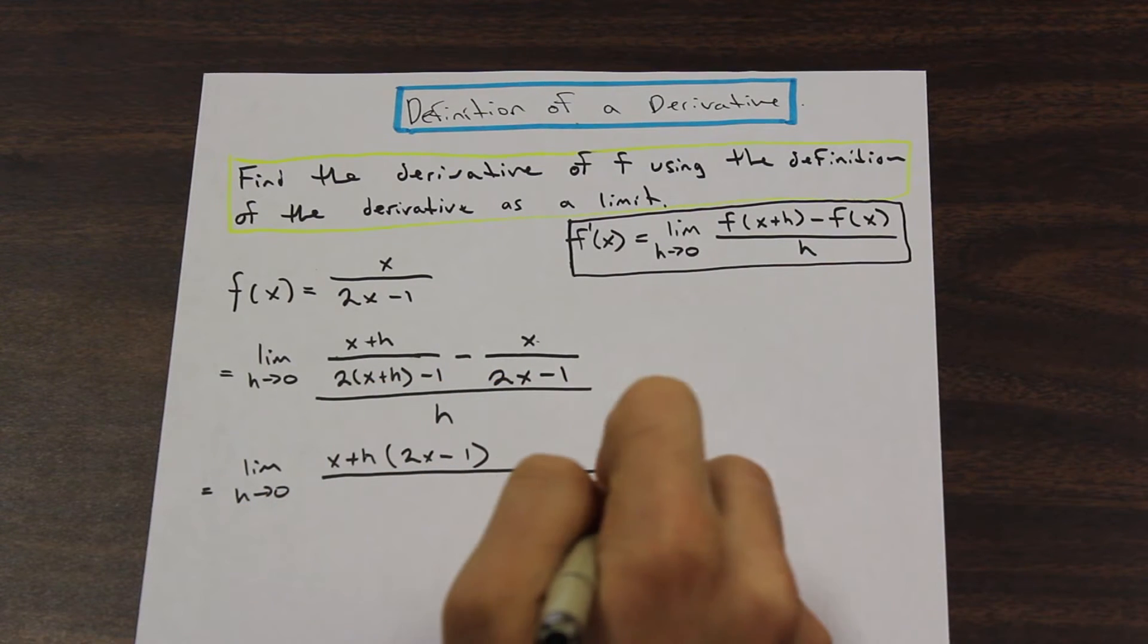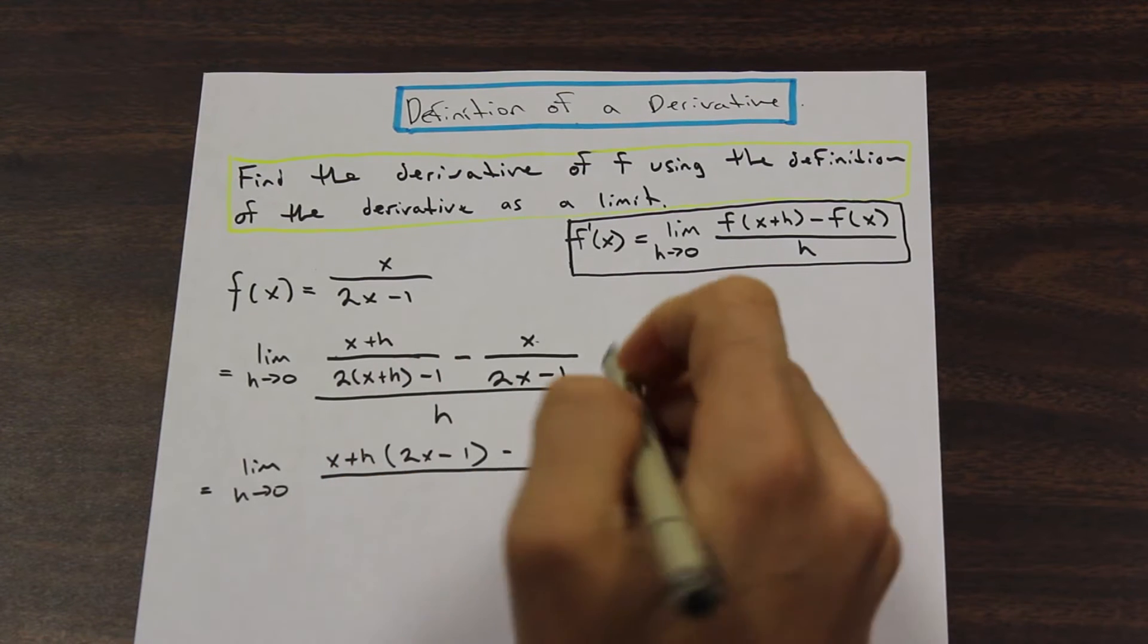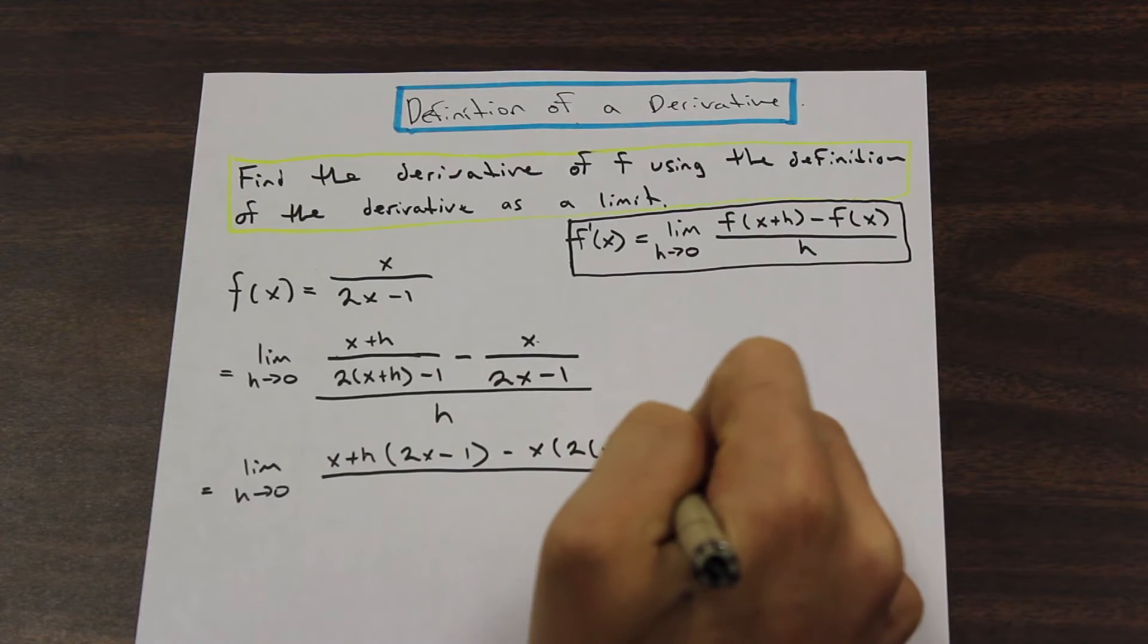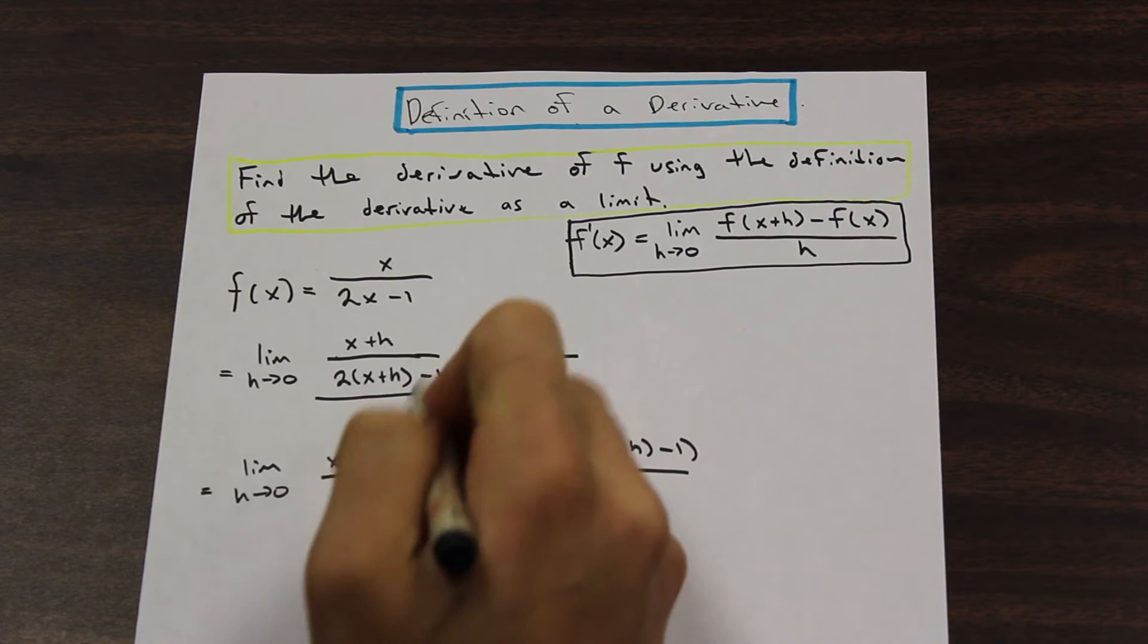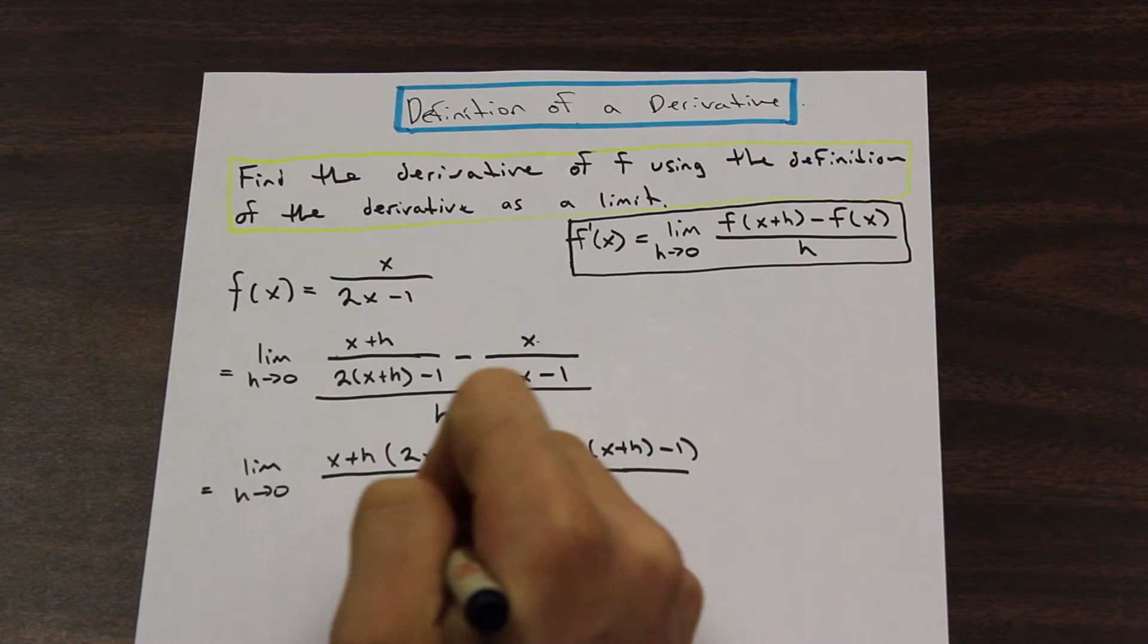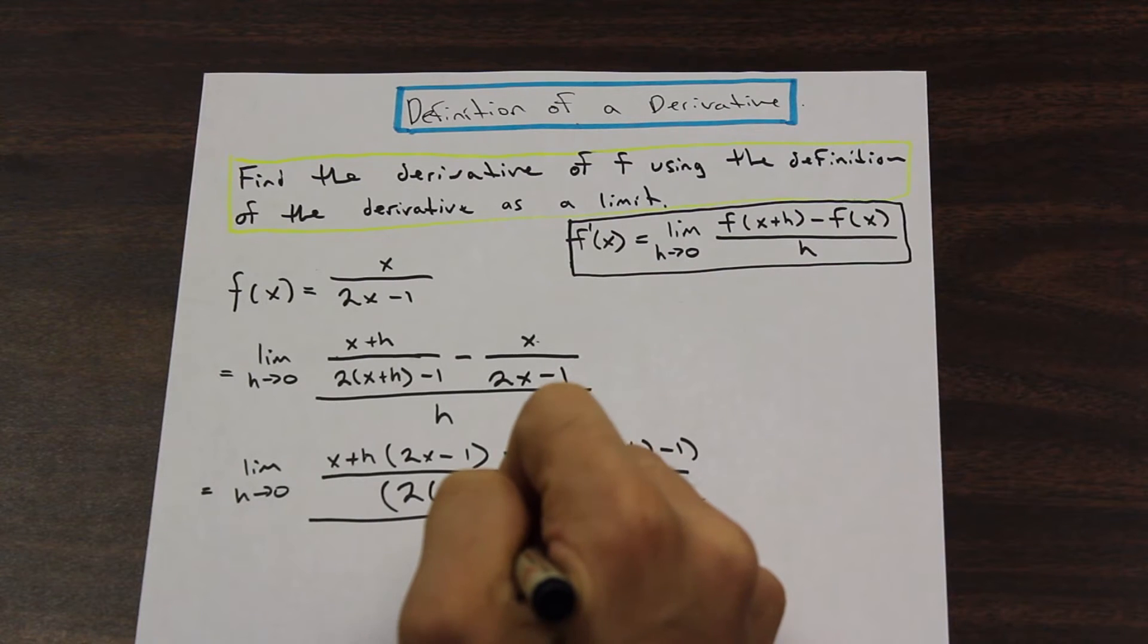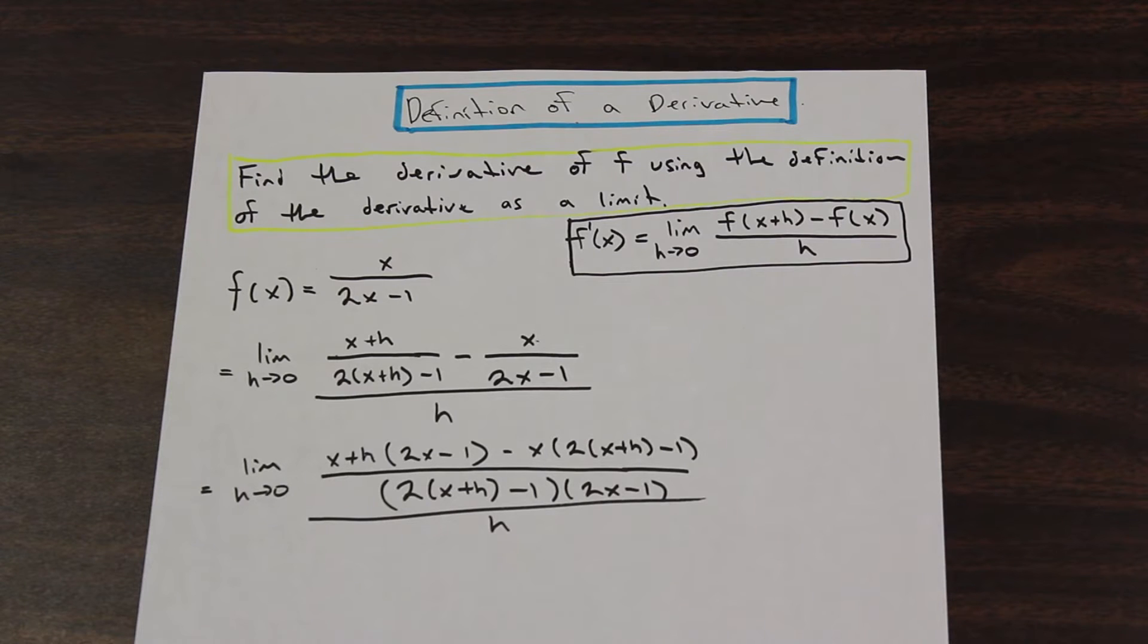So we should arrive at (x+h) times (2x-1). And we are going to multiply x by 2(x+h) minus 1. Perfect. And the denominator for this is going to be the common denominator. And that is going to be these two multiplied by each other. And the whole thing is over h. Perfect.